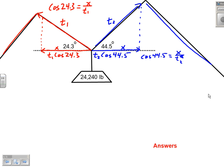Now what do we know about their horizontal components? If this weight is in a state of equilibrium, then we must be pulling just as hard to the left as we are to the right, so these two values should be equal. I'm going to represent T1 cos 24.3 minus T2 cos 44.5 equals 0. They're canceling each other out.